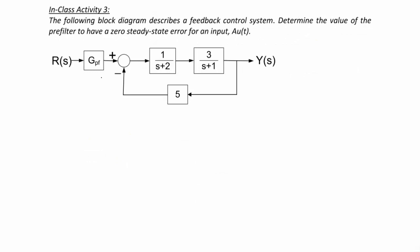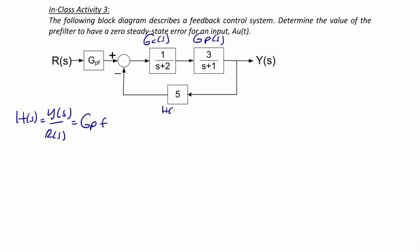In Class Activity 3, the following block diagram describes a feedback control system. Determine the value of the pre-filter to have a zero steady state error for an input A times U(T). The transfer function H(S) equals Y(S) over R(S), and this is going to be GPF times the standard closed loop feedback system. Recall that 1 over S plus 2 is the controller, 3 over S plus 1 is the plant, and H(S) is the feedback sensor.